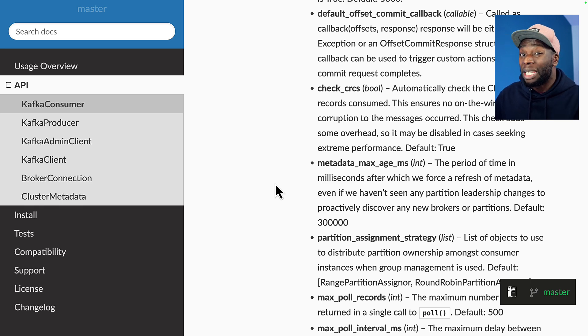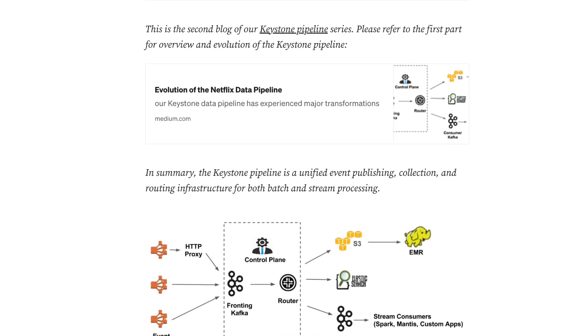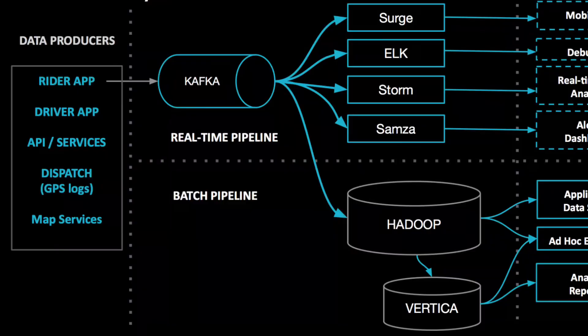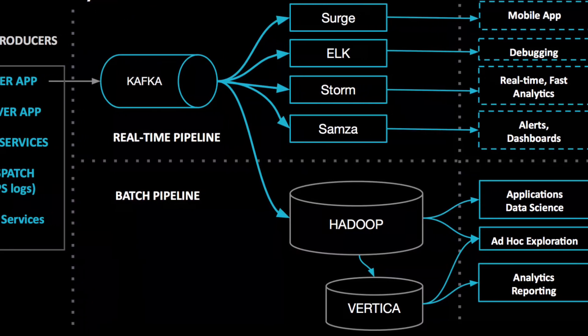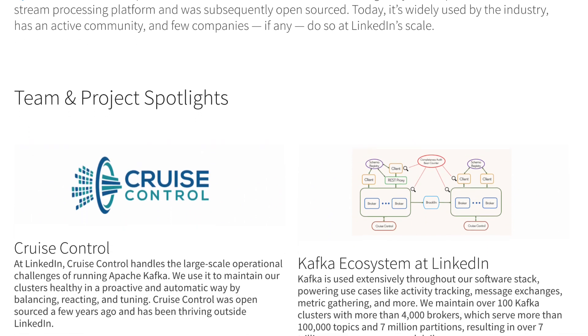Kafka is used in different companies for many different things. Netflix uses Kafka to monitor metrics like response times and error rates and collect them across all their different systems. Uber uses Kafka to coordinate data like driver information, weather, and traffic so that when a user requests a ride, all this information is analyzed to give them the best option. And LinkedIn — the creators of Kafka — use it to collect and process all user interactions throughout their system.